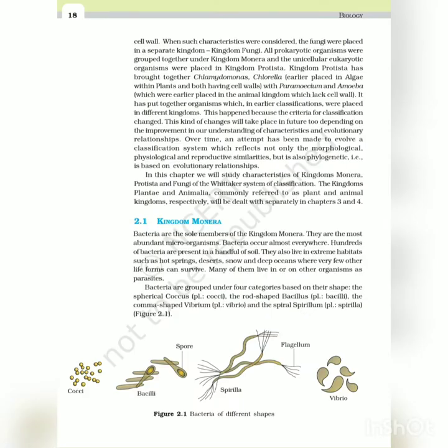When such characteristics were considered, the fungi were placed in a separate kingdom, Kingdom Fungi. All prokaryotic organisms were grouped together under Kingdom Monera, and the unicellular eukaryotic organisms were placed in Kingdom Protista. Kingdom Protista brought together Chlamydomonas and Chlorella, earlier placed in algae within plants, with Paramecium and Amoeba which were earlier placed in the animal kingdom which lack cell walls. This happened because the criteria for classification changed. This kind of change will take place in future too depending on the improvement in our understanding of characteristics and evolutionary relationships.